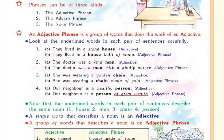Phrases can be of three kinds. Hum teen alag alag different kinds ke phrases dekhenge. Those are: the adjective phrase, the adverb phrase, and the noun phrase. What are adjectives, what are adverbs, and what are nouns — that you already know better.